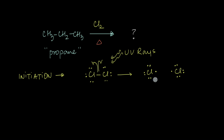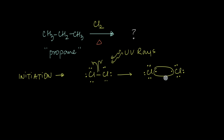The chlorine radical that is formed has only 7 electrons in its outermost shell. So its octet is not complete, making it pretty reactive. It can in fact react with another chlorine radical, and both can combine to give back the chlorine molecule. So there is actually a reversible reaction going on here.